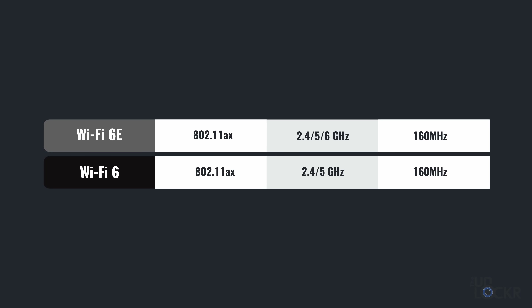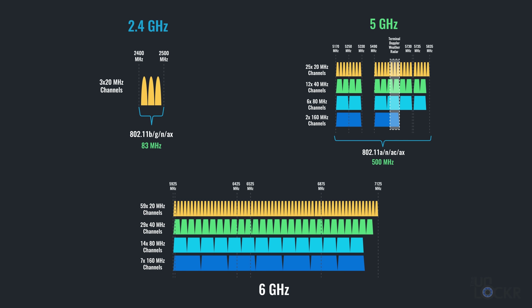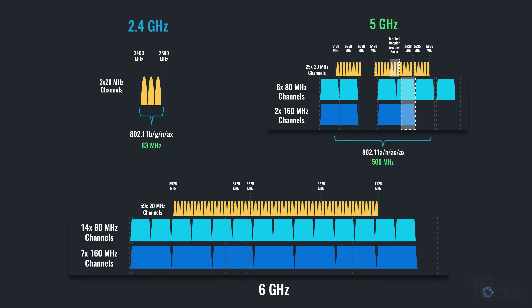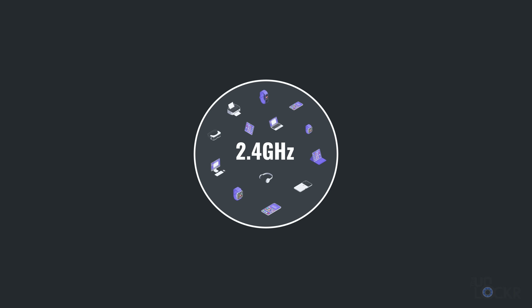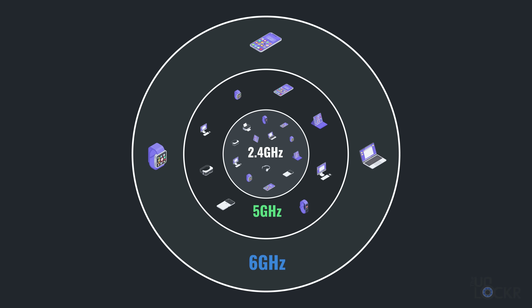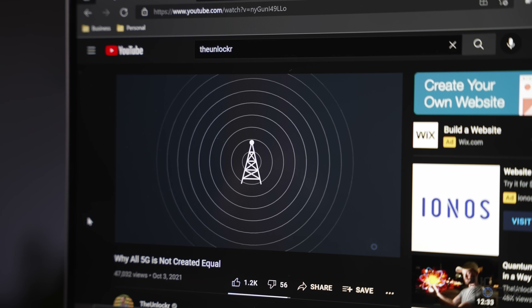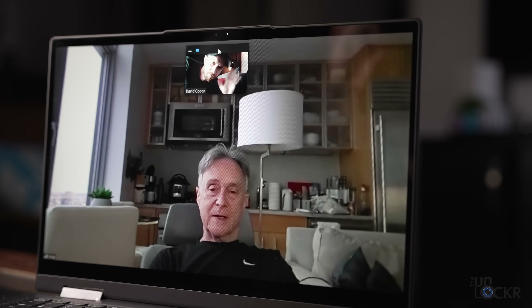Wi-Fi 6E added the much less used 6 GHz into the mix, thanks to the FCC freeing that up for Wi-Fi use not too long ago. That essentially quadruples the amount of bandwidth Wi-Fi devices can use, adding 14 additional 80 MHz channels and 7 additional 160 MHz channels. You can get much faster actual speeds than 5 GHz in most cases simply because these new channels have way less congestion, which also means much better latency. Congestion and latency on Wi-Fi channels cause drops in speed, buffering in videos, frame rate drops in games, and dropped Zoom meetings.